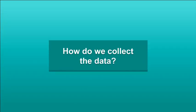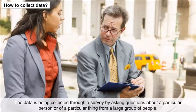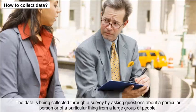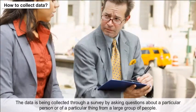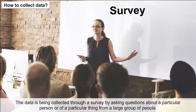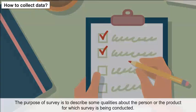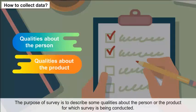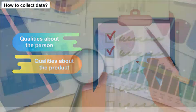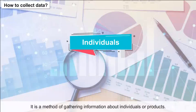How do we collect data? Data is collected through a survey by asking questions about a particular person or thing from a large group of people. The purpose of a survey is to describe some qualities about the person or product for which the survey is being conducted. It is a method of gathering information about individuals or products.